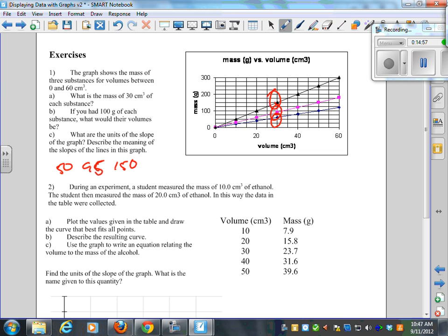If you had 100 grams of each substance, what would their volumes be? So now you're going across from 100, right? So you're talking 20 cubic centimeters. You're talking about 30, 33 cubic centimeters. And I guess that's about 50 cubic centimeters. Can you read a graph?